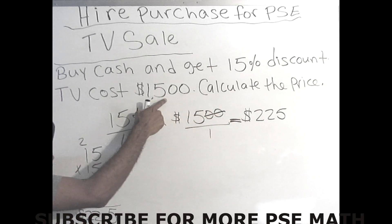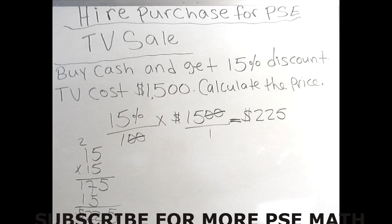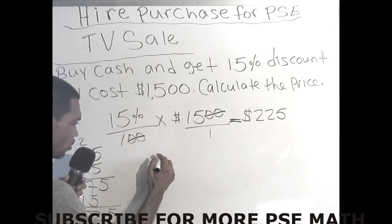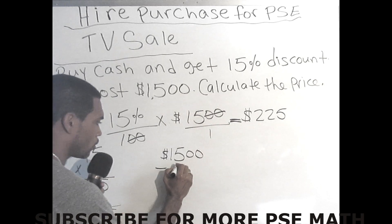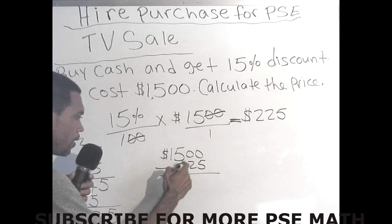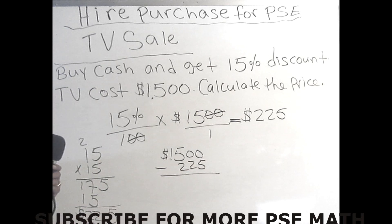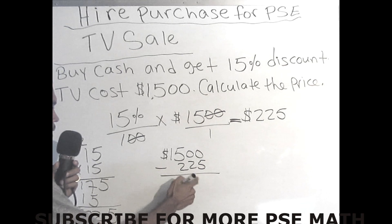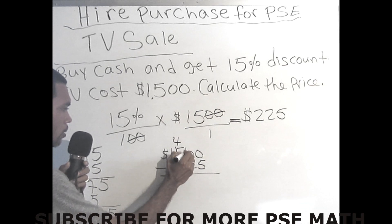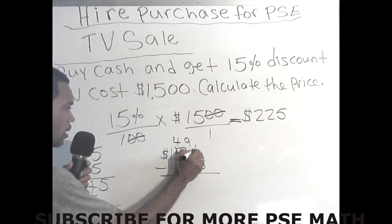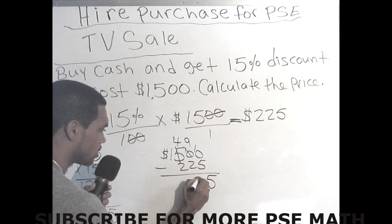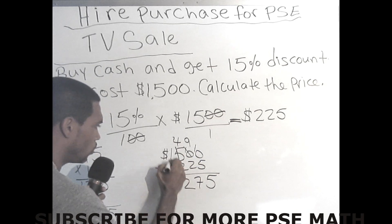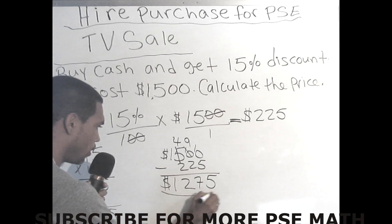Now we need to subtract this $225 discount from the $1500, and that will give us our cash price. The TV costs $1500 minus the discount of $225. Let's work it out: zero minus five — we can't, so we borrow from the five. Five becomes four, this becomes ten; borrow from the ten — that becomes nine, this becomes ten. Ten minus five is five, nine minus two is seven, and four minus two is two. So the price is $1275.